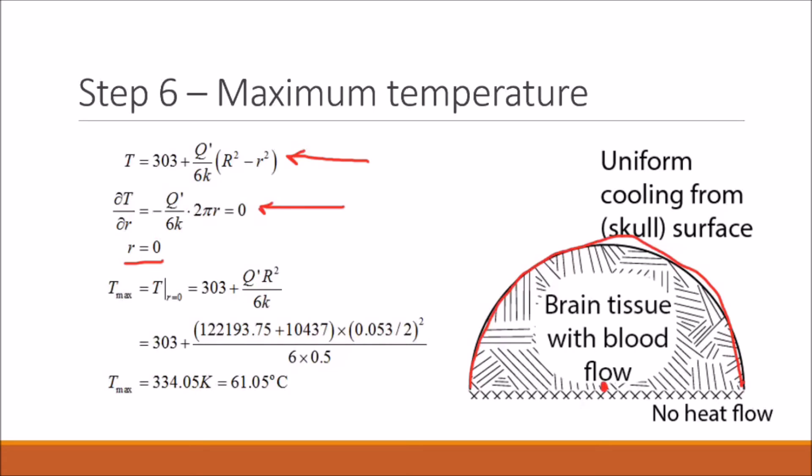So, to find our maximum temperature, we can just go back to our temperature profile and plug in a radius of zero. And we determine our maximum temperature to be 61.05 degrees Celsius. This is nearly 20 degrees Celsius higher than our average temperature.